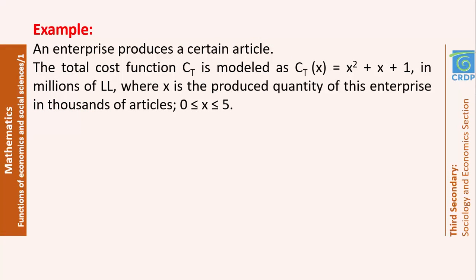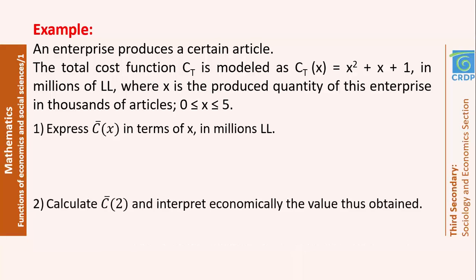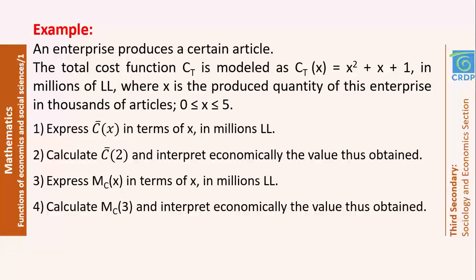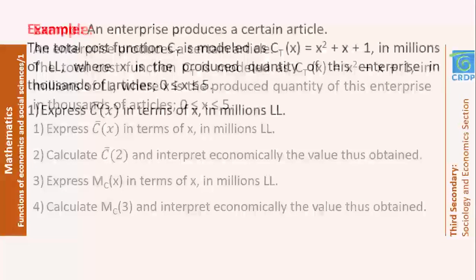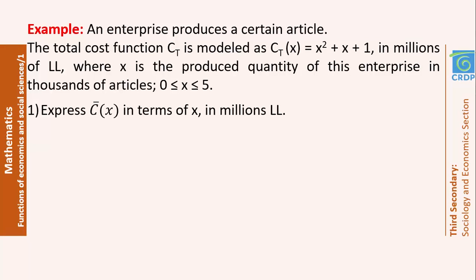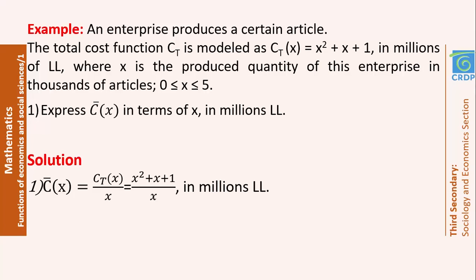Here is an example. An enterprise produces a certain article. The total cost function Ct is modeled as x² + x + 1 — the same as in the previous example. In number 1, express c-bar(x) in terms of x in million Lebanese lira. The average cost is found by dividing the total cost function by x, giving c-bar(x) = (x² + x + 1) / x in million Lebanese lira. In number 2, calculate this average cost when x equals 2: replacing x by 2 in c-bar gives 7/2 million Lebanese lira.